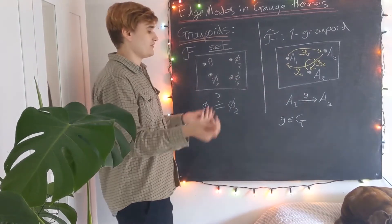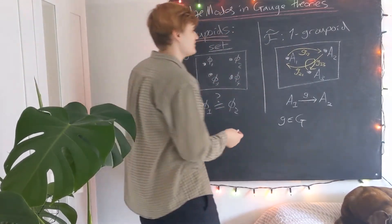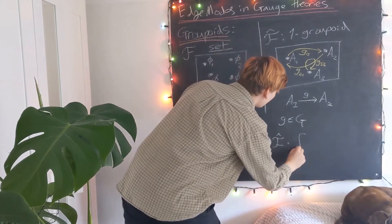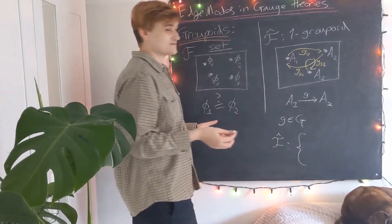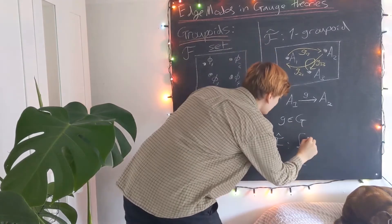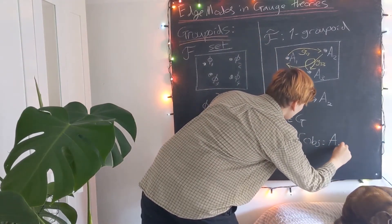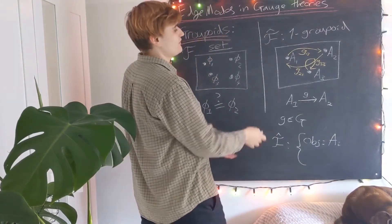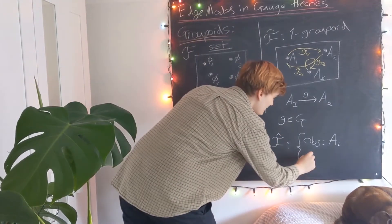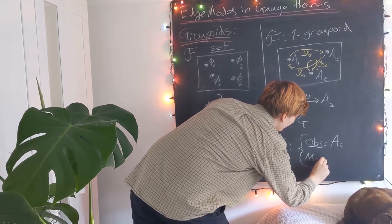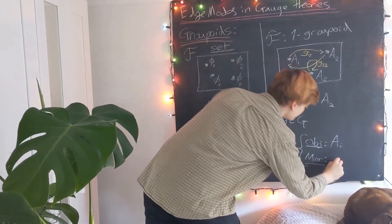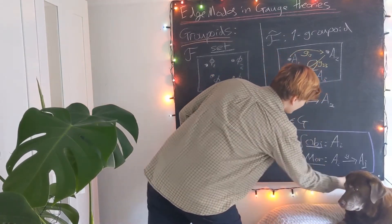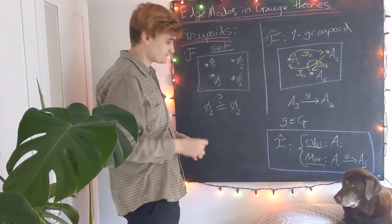So I've drawn pictures to represent the groupoid — how do we write this in more mathematical notation? We simply specify that the groupoid F-hat as an object is given by two things: first, the objects, which are the gauge fields A_i, and second, what are known as morphisms — essentially the transformations between the elements of the groupoid. So the objects are gauge fields, and the morphisms are gauge transformations. This is how you would formally give the information of this groupoid.